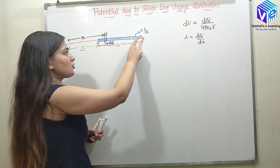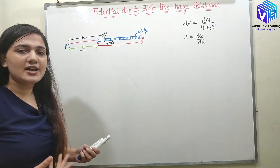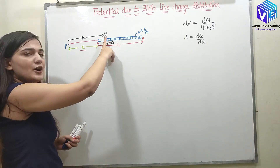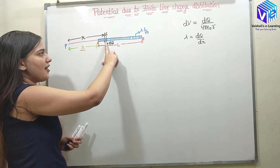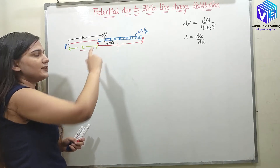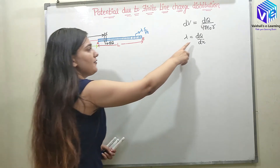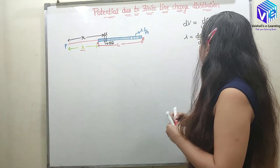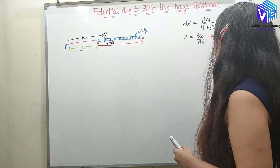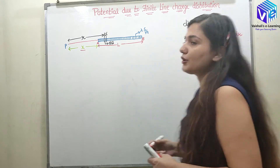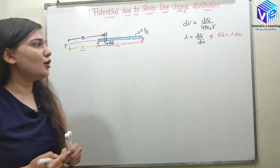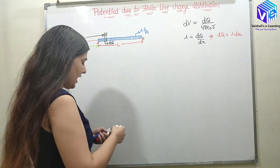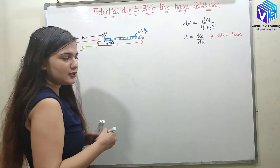Now coming to lambda — lambda is the line charge density. Lambda = DQ / DR. For this case, if I have taken the small charge DQ and the small length DR, lambda will be DQ upon DR. So DQ = lambda · DR. Now in this formula I can put the value of DQ.